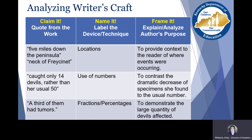That use of numbers really provides a contrast showing the dramatic decrease — from 50 to just 14 — which illustrates that something is happening with these Tasmanian devils. Then finally, 'a third of them had tumors' — we label that as fractions and percentages. The author's purpose: to demonstrate the large quantity of devils that have been affected with this particular cancer.